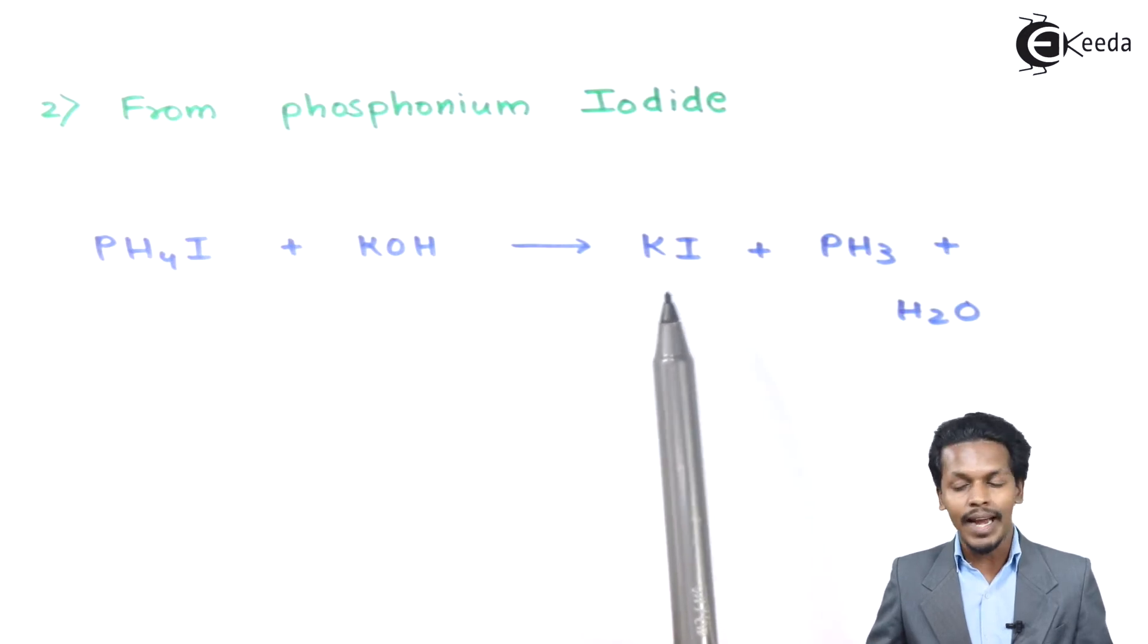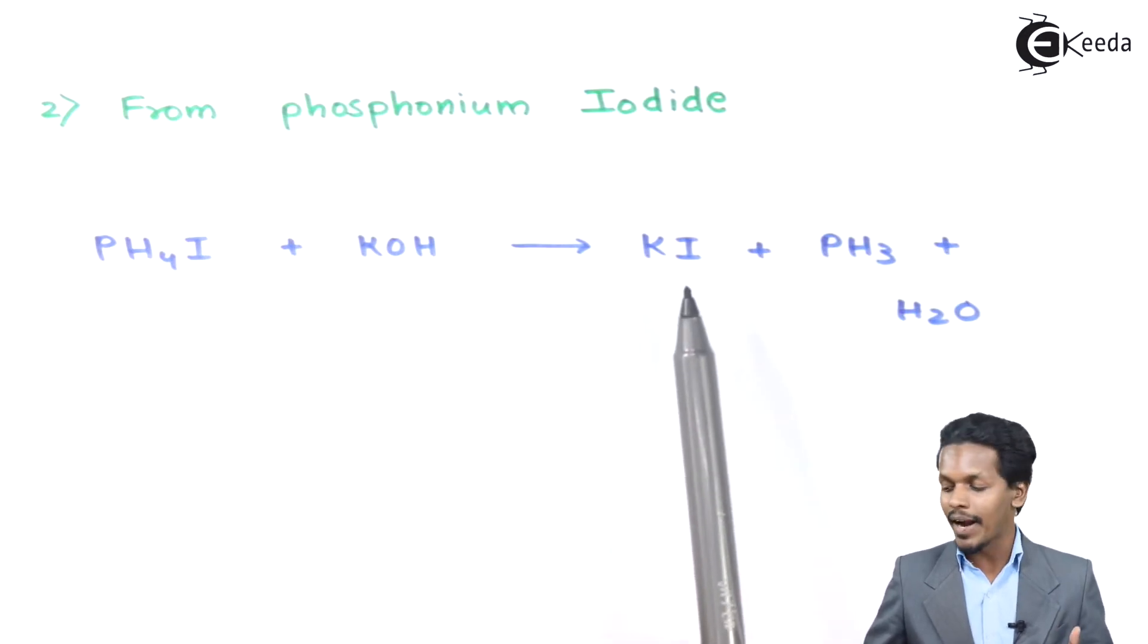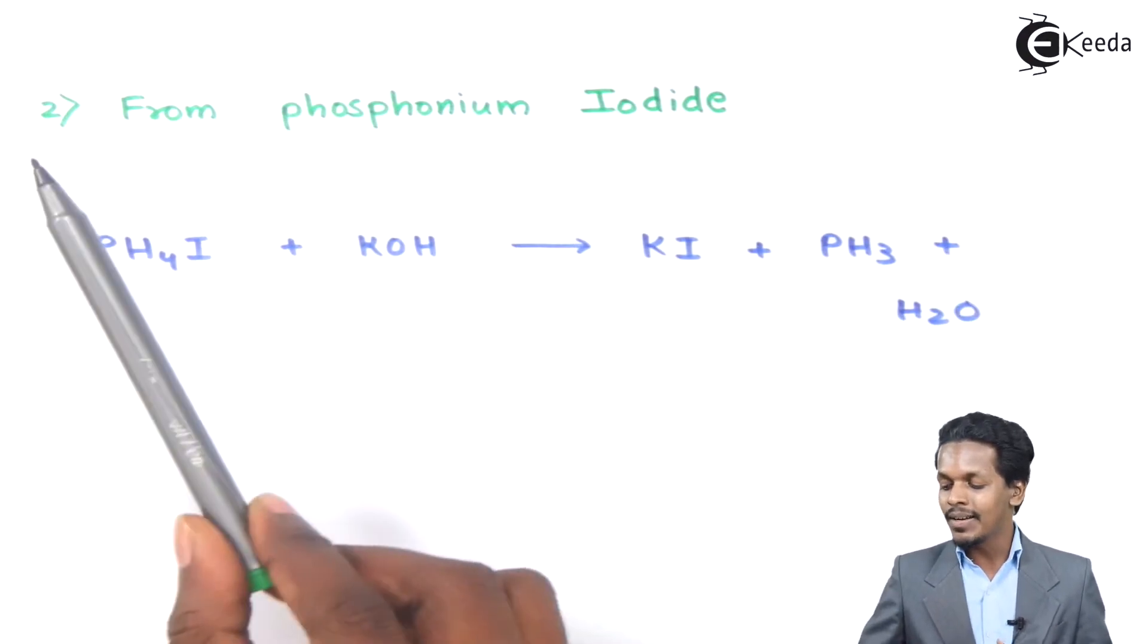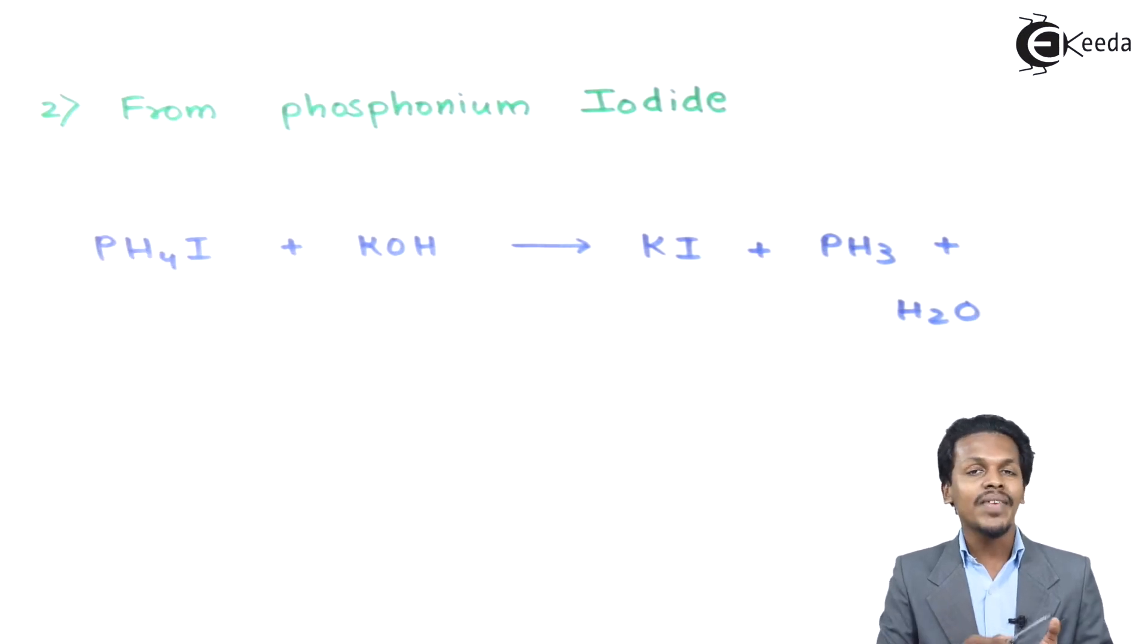The product that we could get is KI, potassium iodide, as well as PH3, the main thing that we need, which is phosphine, along with H2O as a byproduct. So by phosphonium iodide also we can prepare phosphine. This was one reaction, and now let me talk about the next one.